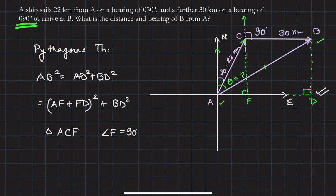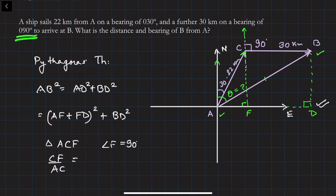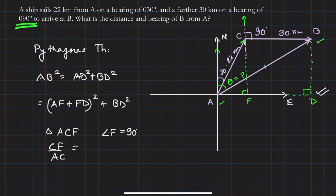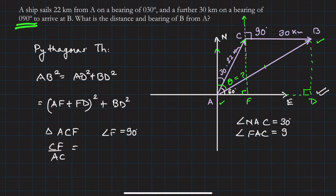Since angle F in triangle ACF is 90 degrees, we can use trigonometry. The bearing NAC is 30 degrees, so angle FAC = 90° − 30° = 60 degrees. Therefore CF/AC = sin 60°.